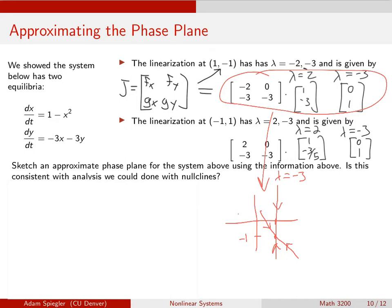So we kind of know what the phase plane looks like, at least locally, really close to (1, -1). And we can say the same using all of this information.